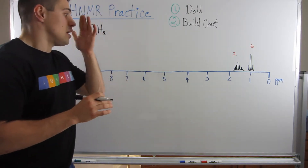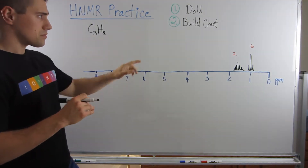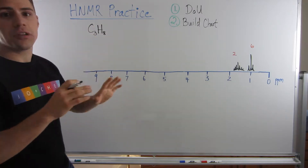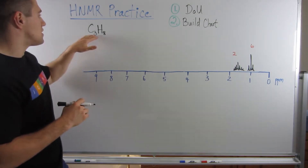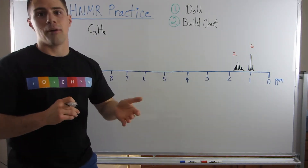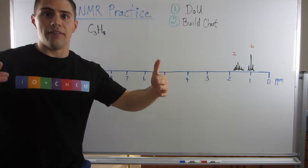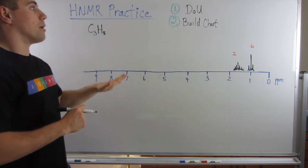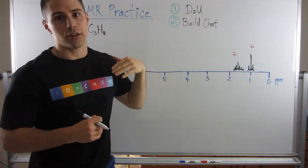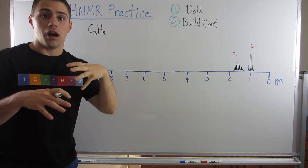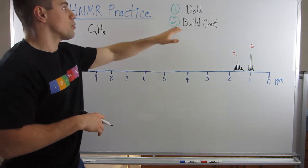I like to break this down into two steps. The very first thing you want to do — and this is going to be a simple example, then we'll move to a more involved one — given C3H8, we need to deduce a structure. This is just to introduce the process. The first thing I like to do is determine the total degrees of unsaturation.